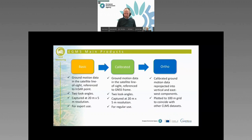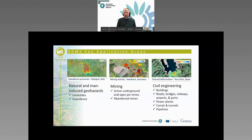The key application areas include natural and man-made induced geo-hazards, slow phenomena like landslides, subsidence, for example in mining areas, and civil engineering. When we look at data like this, buildings, roads, bridges, railways — yes, you can see them. But you may need more detailed information if you want to go into the details. You can use EGMS as a starting point to identify areas where you need to get more information.